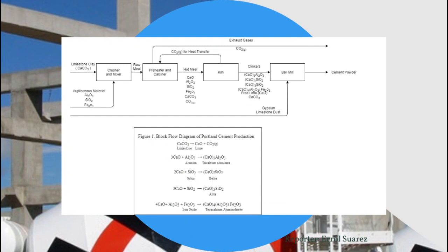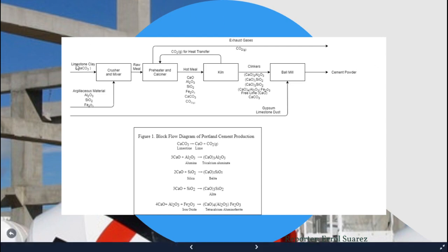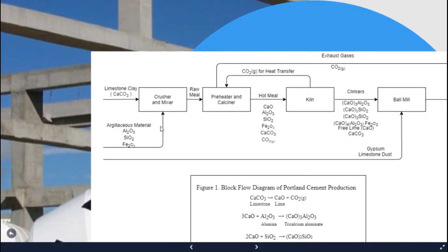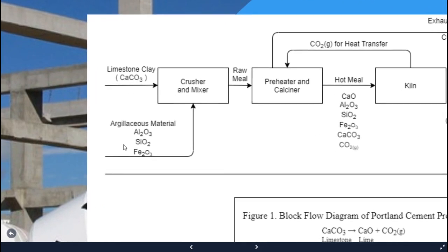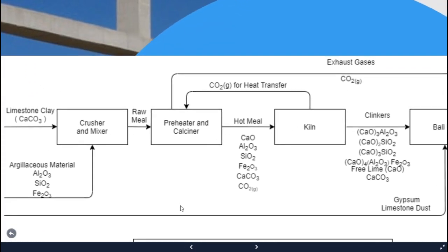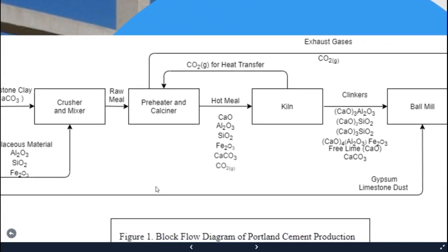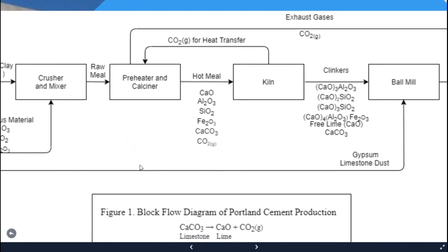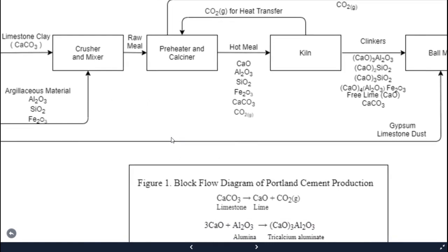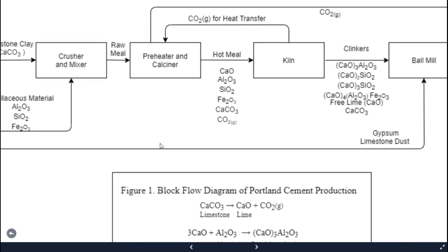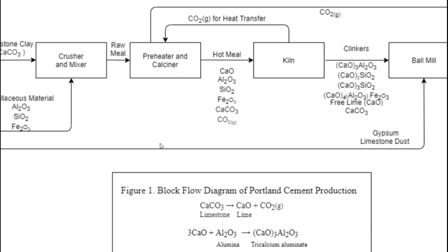Before going into detail with the unit processes and unit operations, let's first take a quick glance at the block flow diagram. Calcareous material such as limestone and argillaceous material enter a crusher and mixer. The raw meal then enters a preheater connected to a calciner, where the calcination reaction happens. The calcium carbonate is converted into calcium oxide and carbon dioxide gas. The hot meal contains quicklime, unreacted calcium carbonate, alumina, silica, and iron oxide.